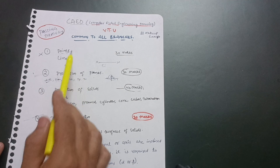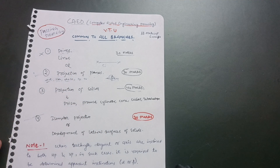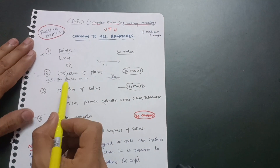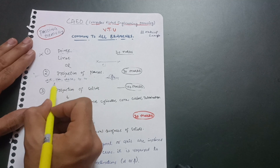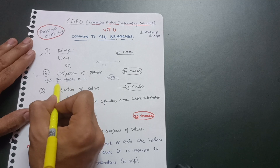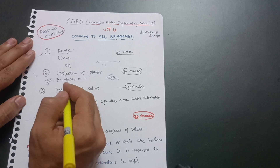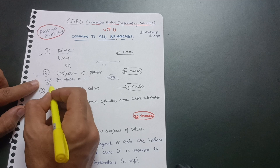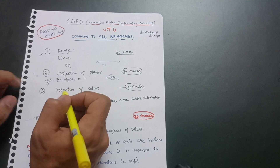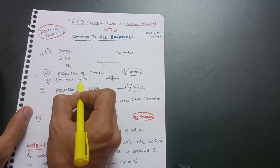Before going to projection of planes, you should have the concept of points - it is a basic topic that helps a student easily understand projection of planes. For projection of planes, focus on three key points: What, Where, and How. 'What' means what type of lamina is it - triangular, square, etc., as mentioned in the question.